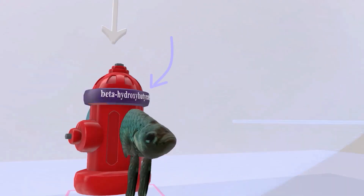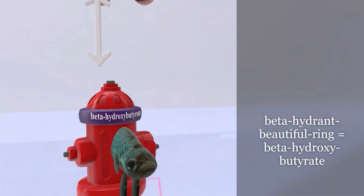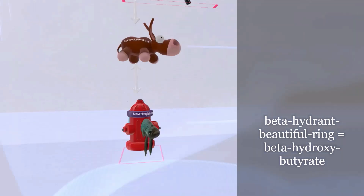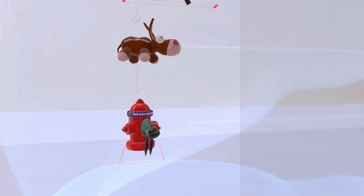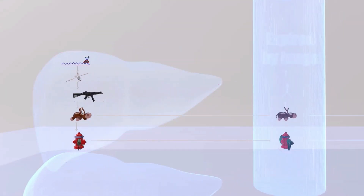Acetoacetate can actually interconvert itself into a half beta-fish half hydrant, and this hydrant has a beautiful ring around it. So this is the beta fish hydrant with the beautiful ring — beta-hydroxybutyrate. Acetoacetate can interconvert to beta-hydroxybutyrate, which is the second ketone body. Both are produced in the liver.